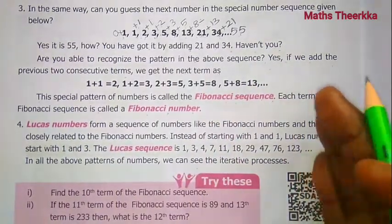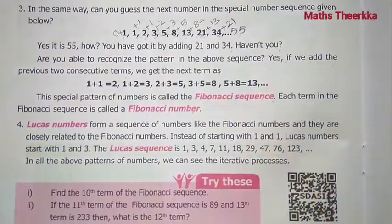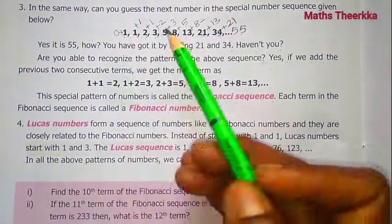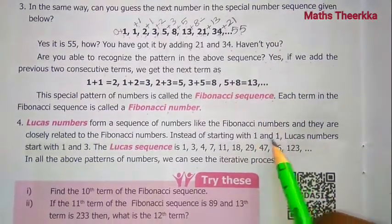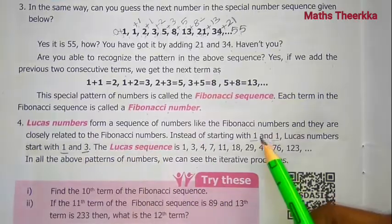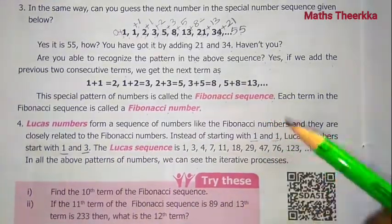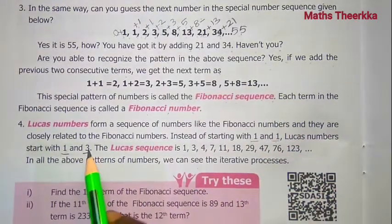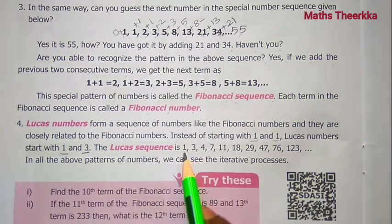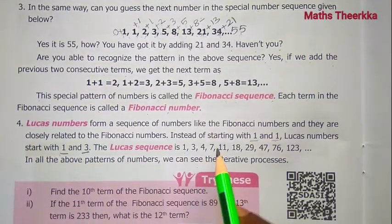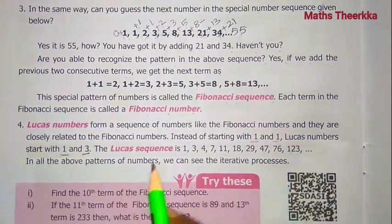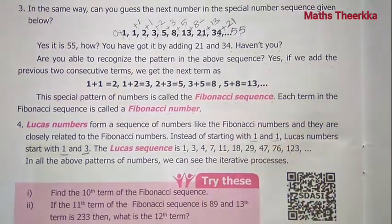The Fibonacci sequence starts 1, 1, 2, 3, 5, 8... while the Lucas sequence starts 1, 3 and follows the same rule of adding the previous two terms. Lucas numbers are: 1, 3, 4, 7, 11, 18, 29, 47, 76, 123. We will continue to try this.